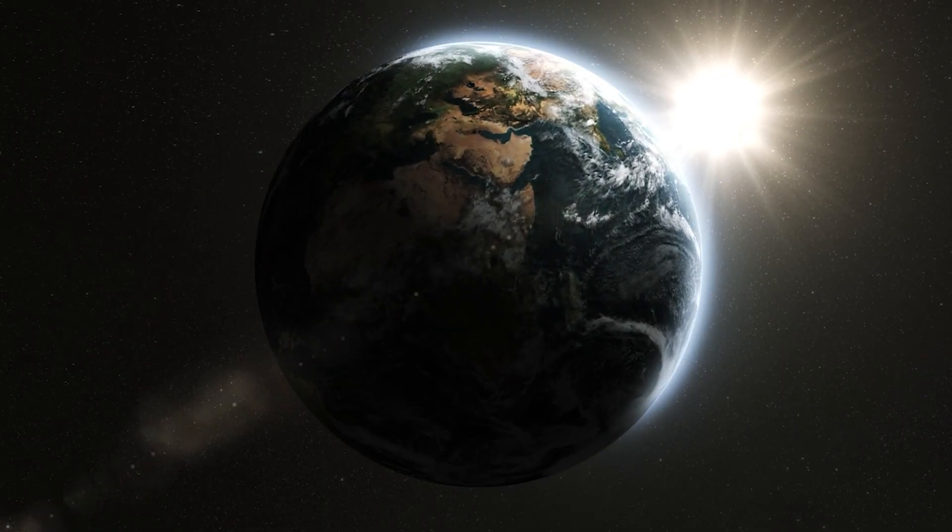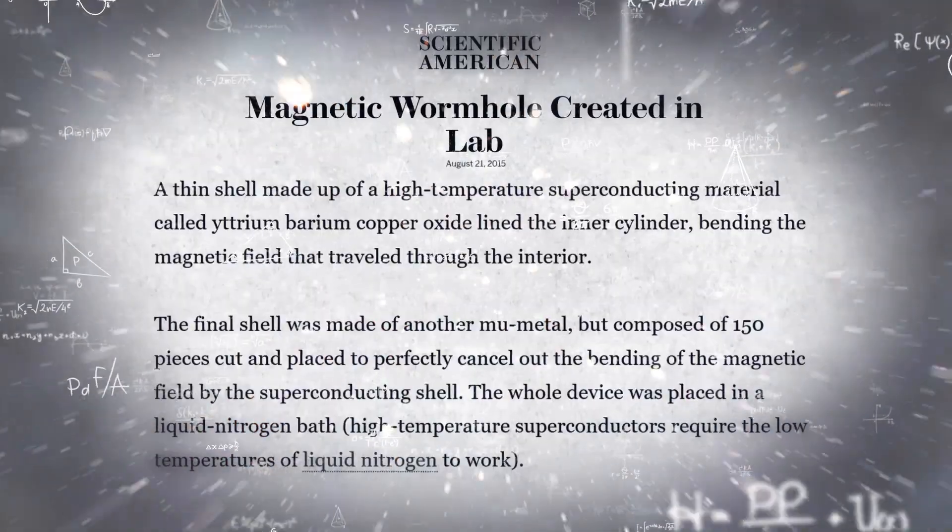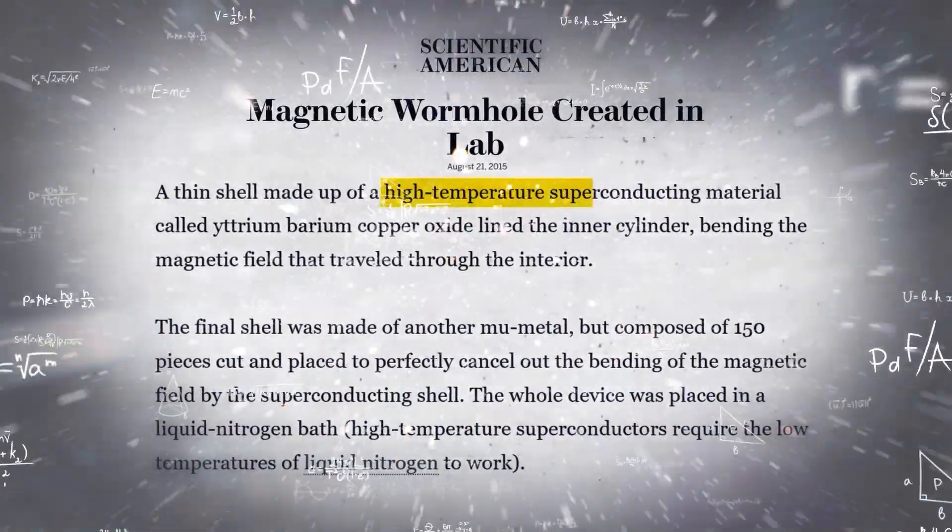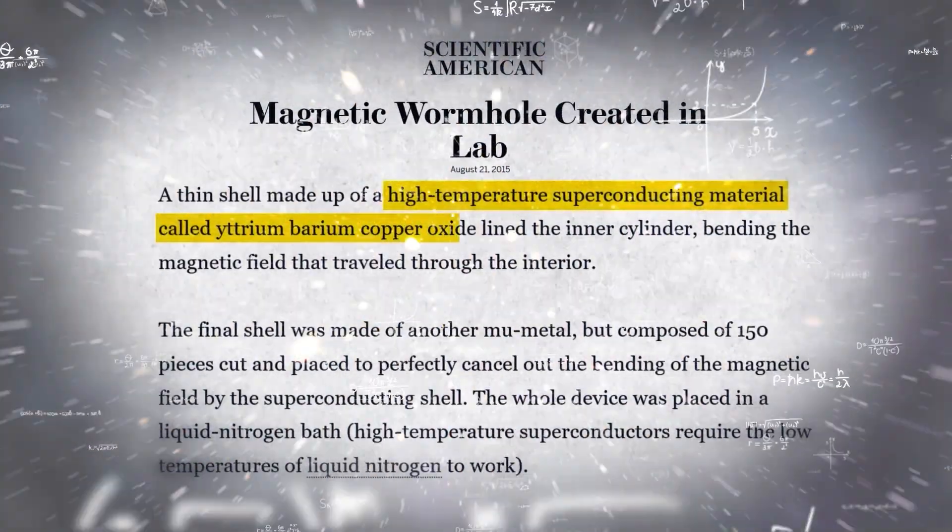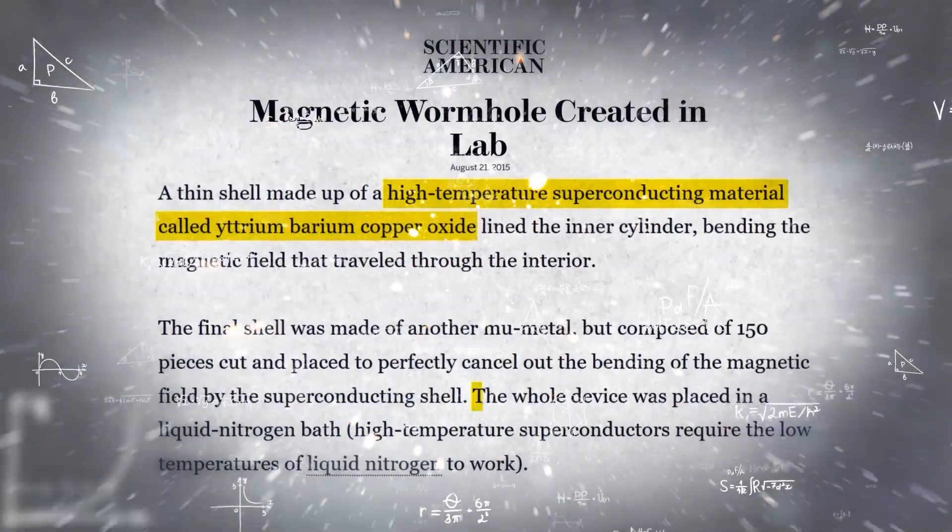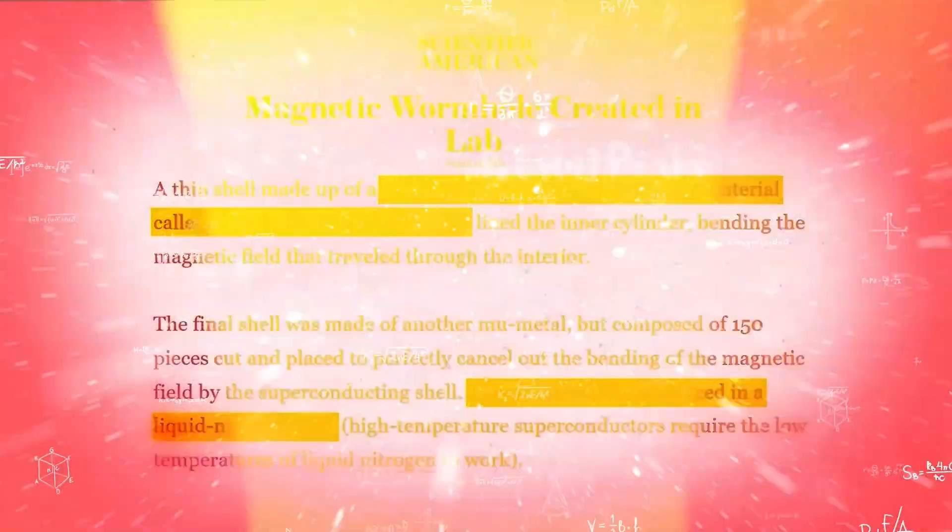Like in the universe, a wormhole works by bending the curvature of space-time. In this case, the wormhole is bending the magnetic field to create this magnetic wormhole. A high-temperature superconducting material called yttrium-barium copper oxide was used. The material was stored in a liquid nitrogen bath to perform the experiment.